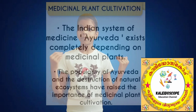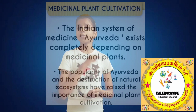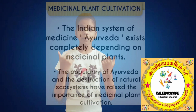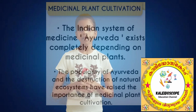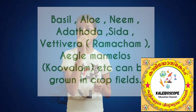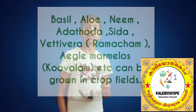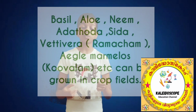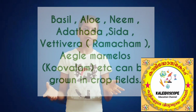Medicinal Plant Cultivation produces different types of medicinal plants. Varieties such as Basil, Vetivera, Aegle marmelos, and Plumbago are grown in the crop field.